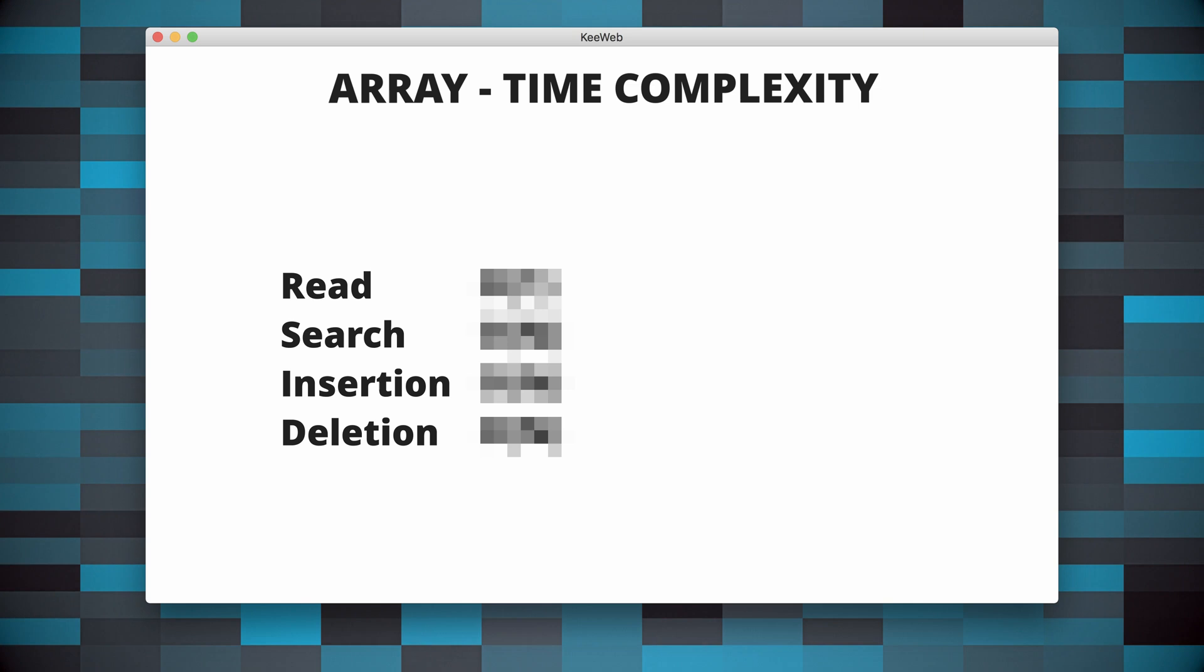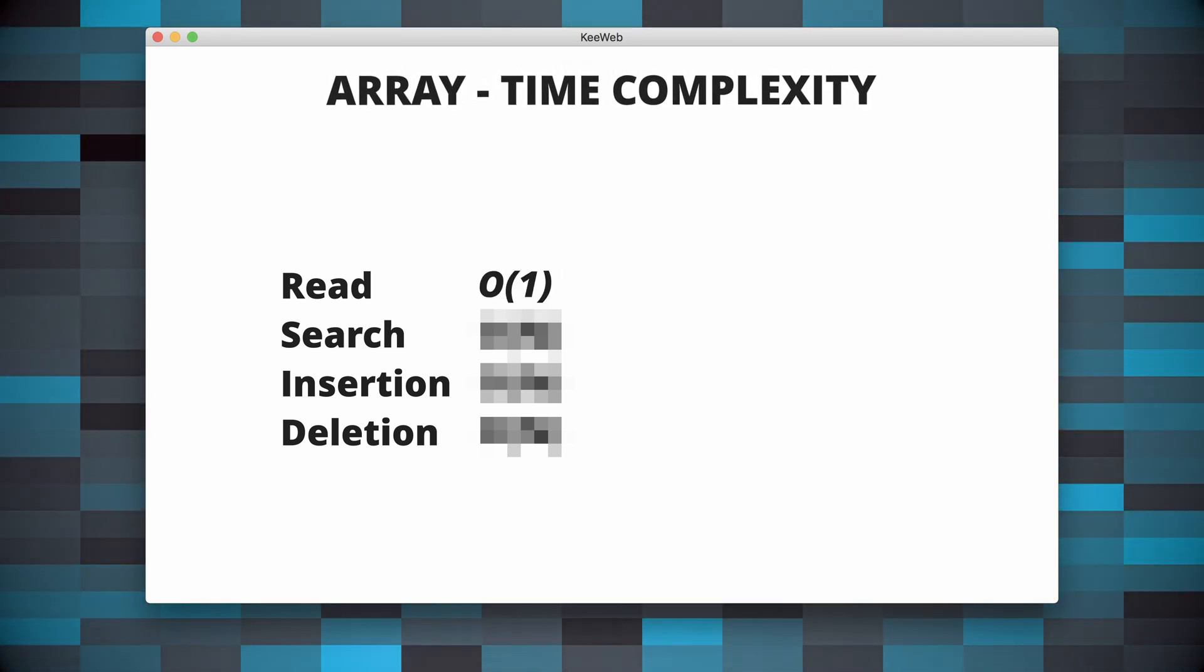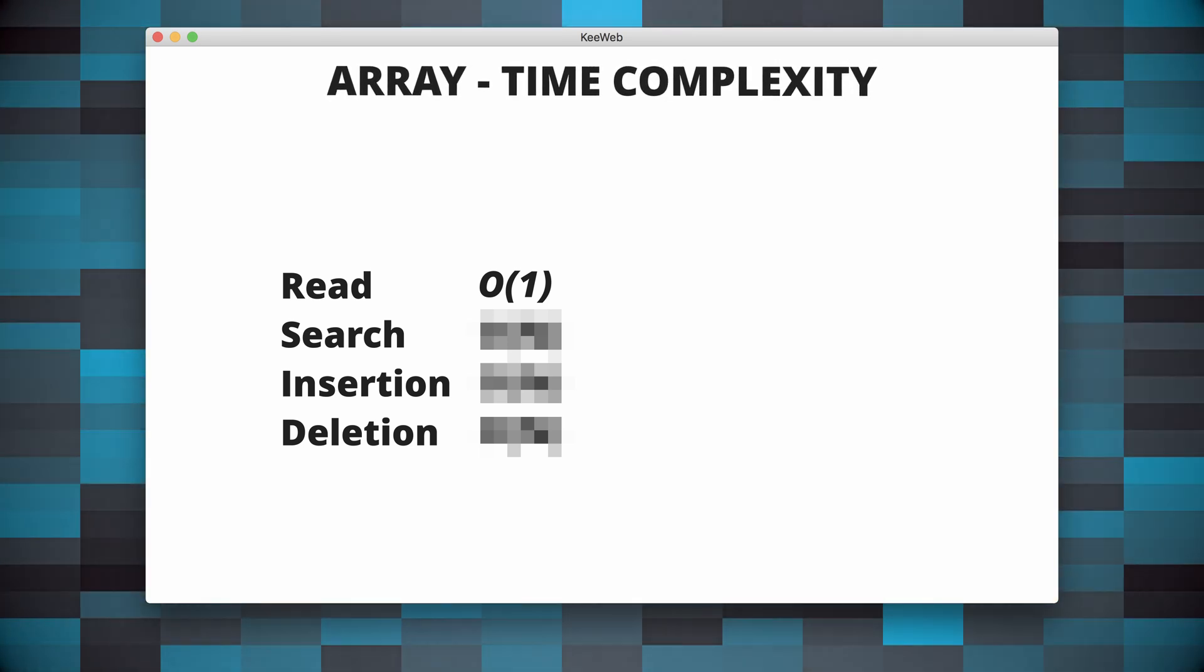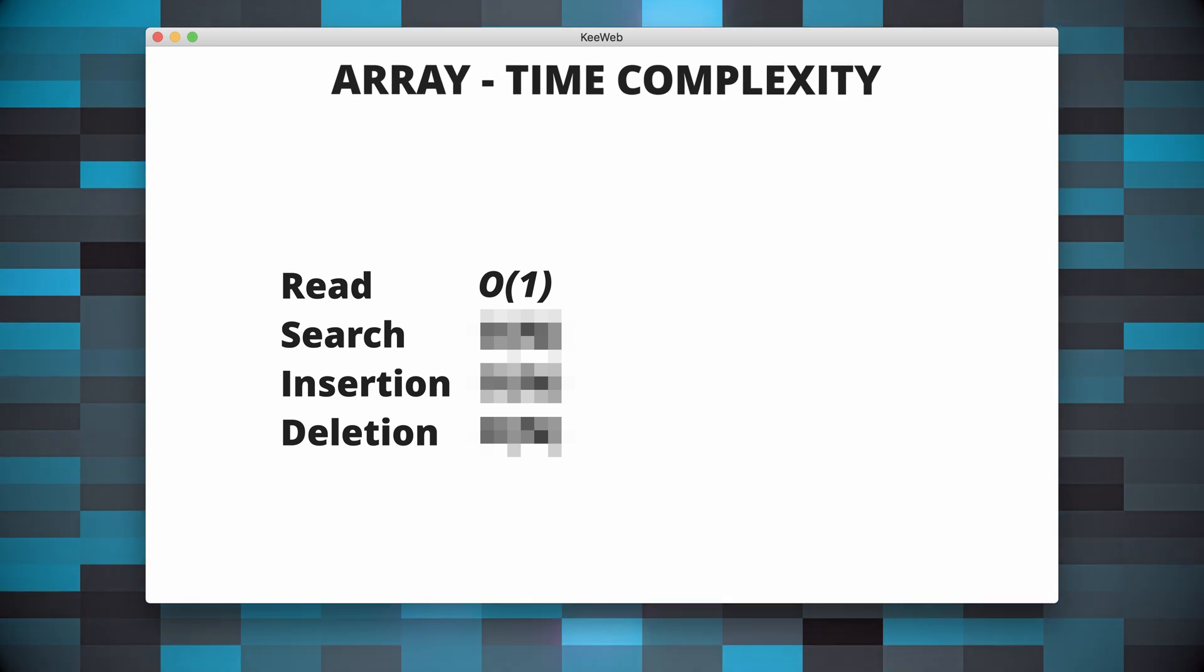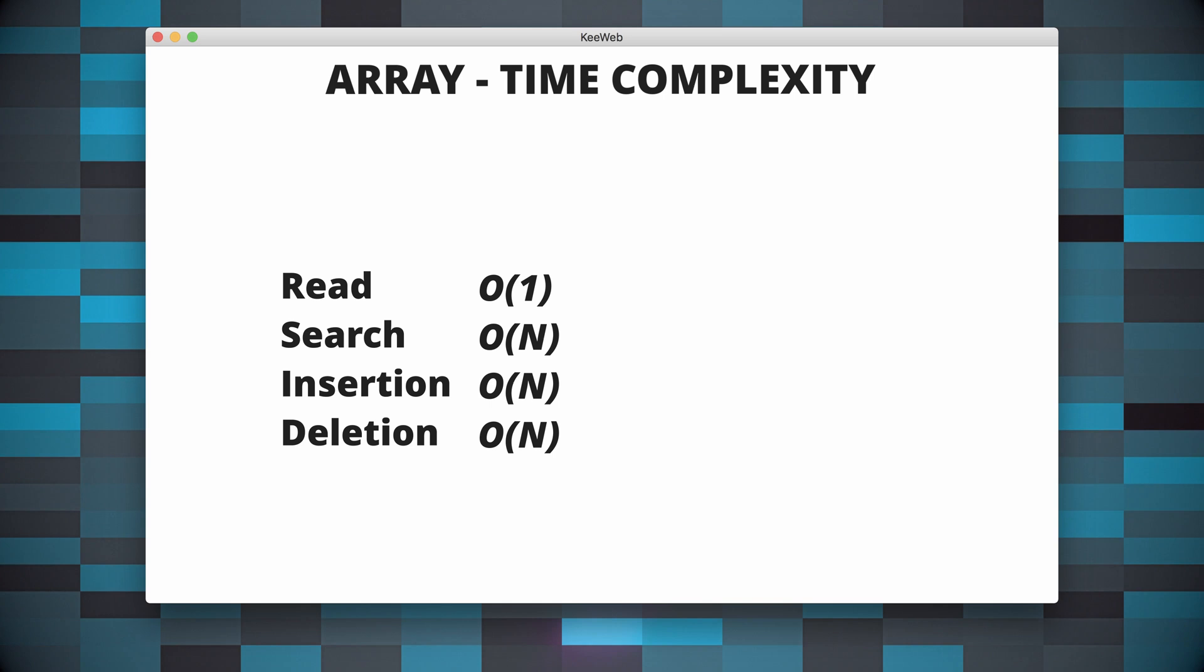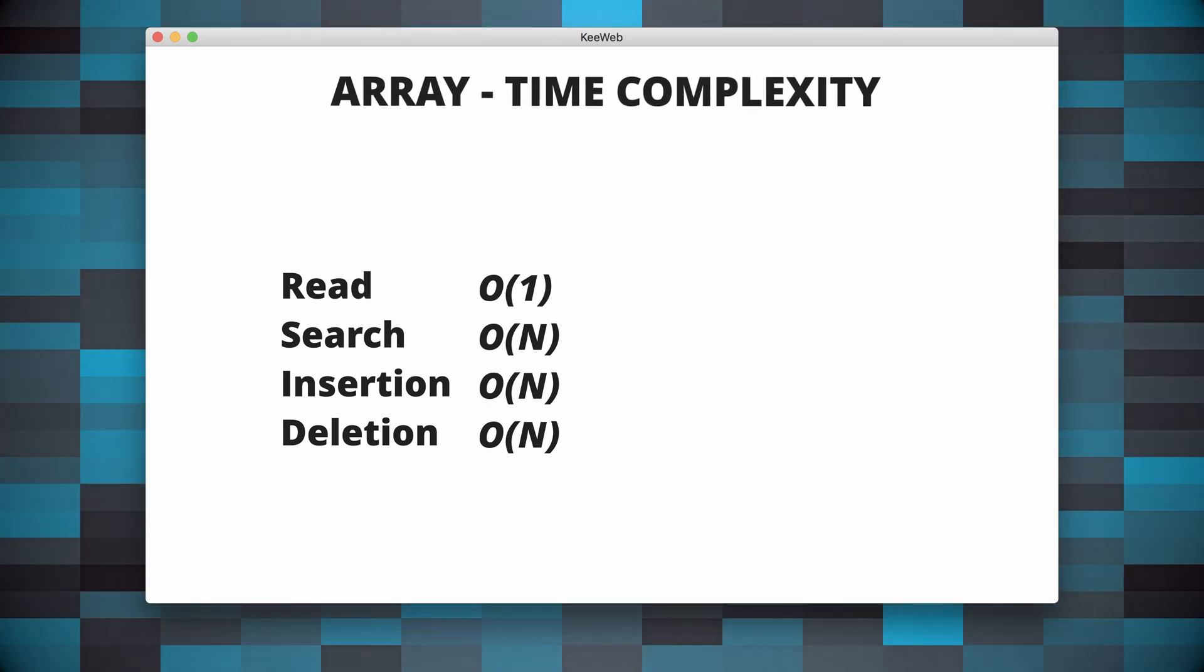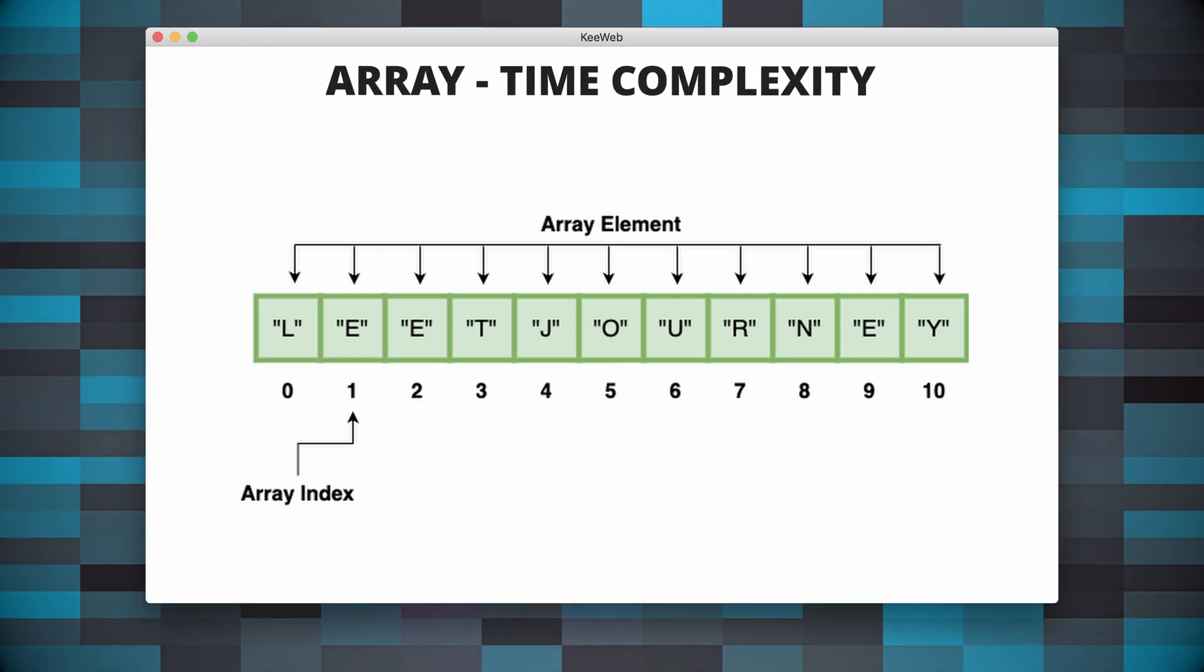Let's talk about time complexity of some of the array operations. Accessing an element takes constant time, whilst searching, inserting, and deleting takes O(n) time. The time complexity of inserting and deleting elements in Python arrays depend on the location of the element being added or removed.